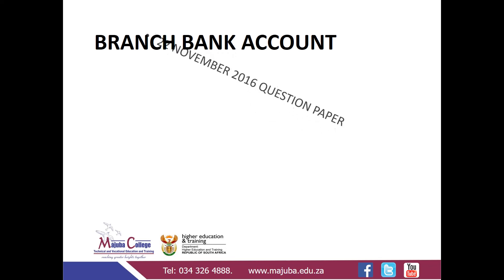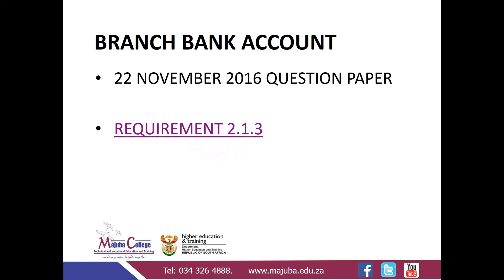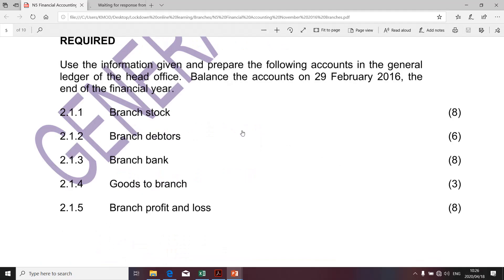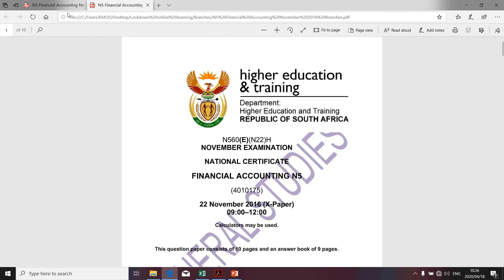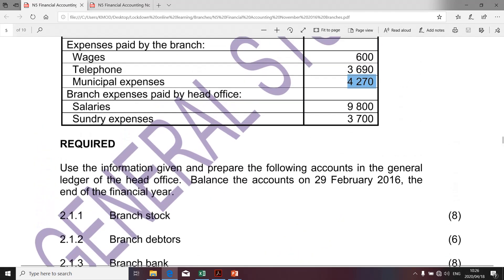I'd like us to look at the question paper which was written on the 22nd of November 2016. In that question paper, requirement 2.1.3 related to the preparation of the branch bank account. I'd like us to employ the Excel spreadsheet to illustrate the preparation of the branch bank account, which we'll refer to as the T-account. I quickly want to go to the given information that contains the transactions we're going to take into account.